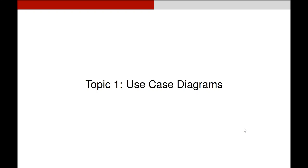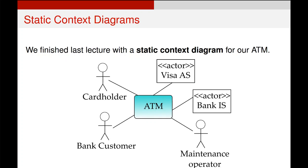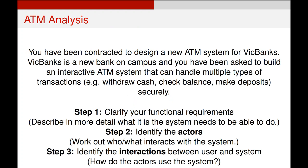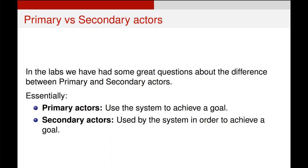Now we're going to talk about how you take the static context diagrams and turn them into full use case diagrams. We finished the last video talking about this is the relationship between our actors and our system. We got to this by clarifying our functional requirements, identifying the actors, and then identifying the interactions between our user and our system.